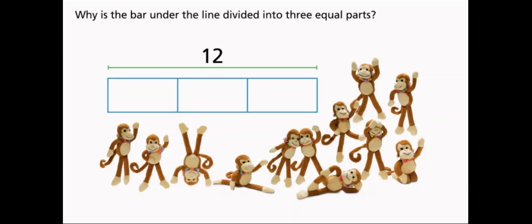Why is the bar under the line divided into three equal parts? The three parts represent the three friends who are sharing the toys.